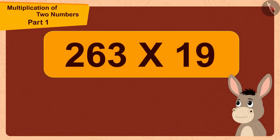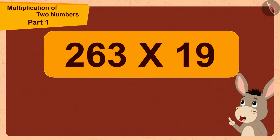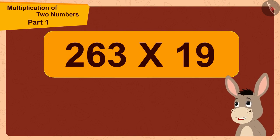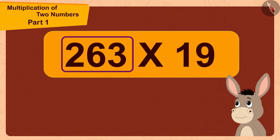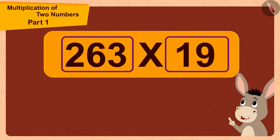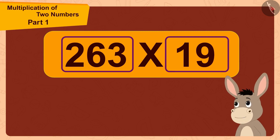Bhola thought, here we are multiplying the three-digit number 263 by the two-digit number 19. Since 19 is a two-digit number, I can do this multiplication in two steps.